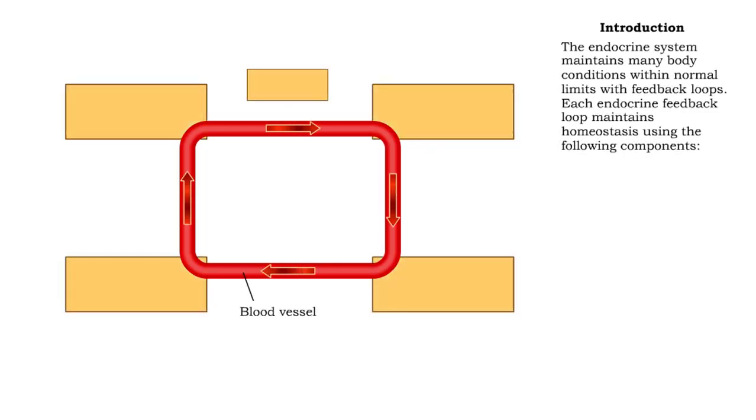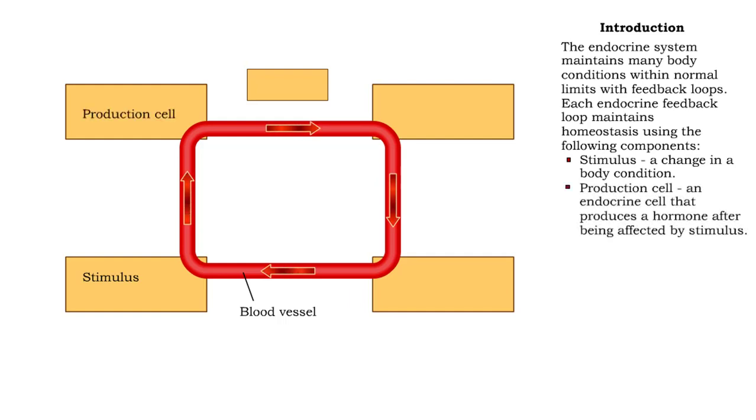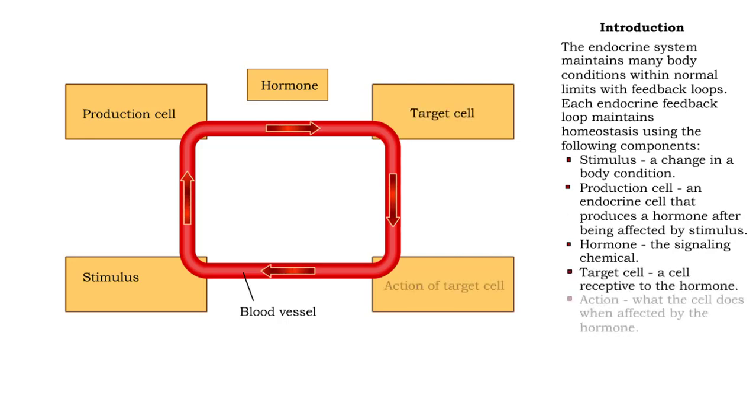The endocrine system regulates many body conditions with feedback loops. Each feedback loop has the following components: stimulus, a change in body condition; production cell, an endocrine cell that produces a hormone after being affected by stimulus; hormone, the signaling chemical; target cell, a cell receptive to the hormone; and action, what the cell does when affected by the hormone.